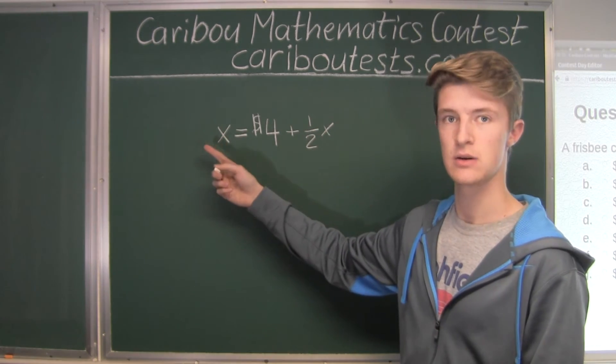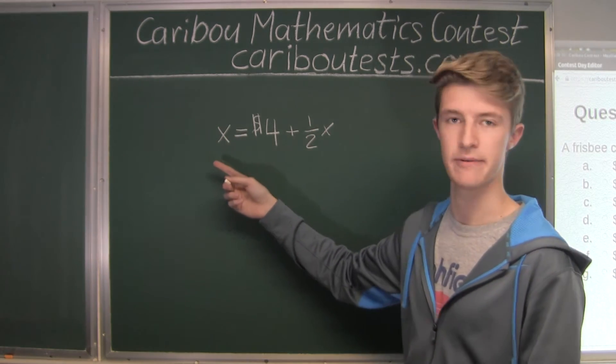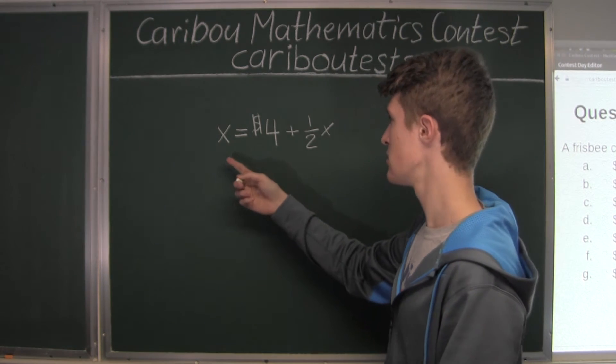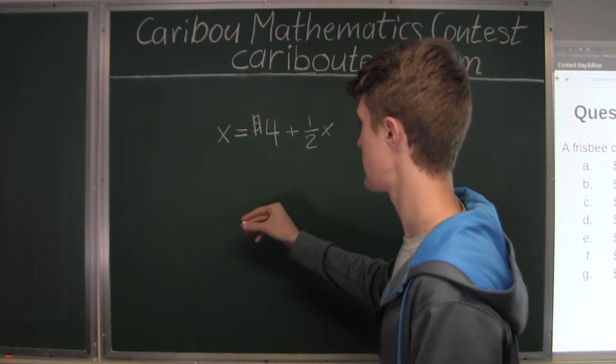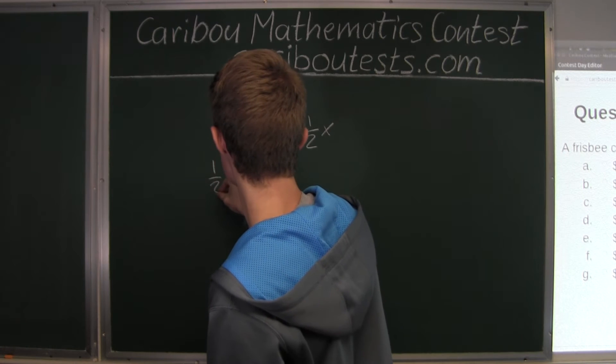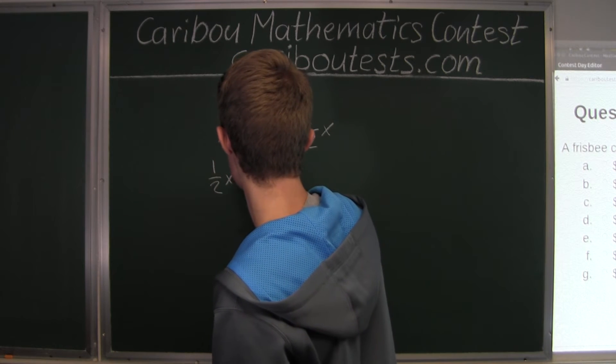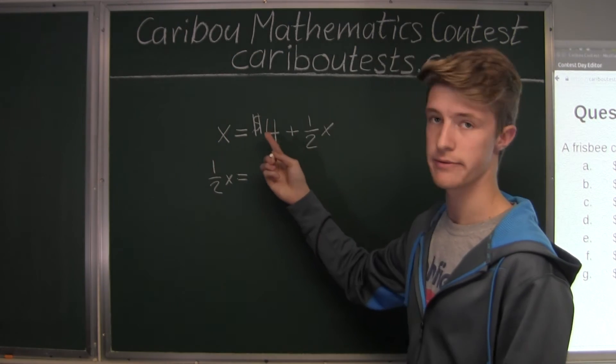and this is like 1x. So 1x minus a half x leaves us half x or 1 over 2x on the left side. And we're still left with the $4.